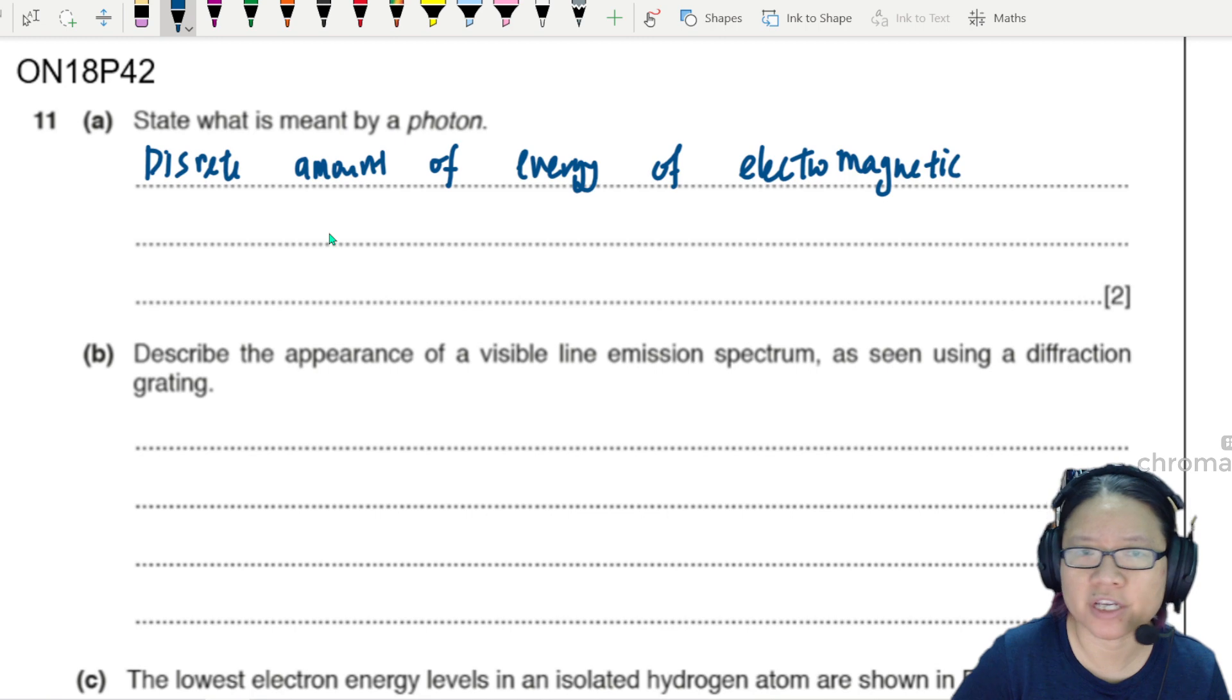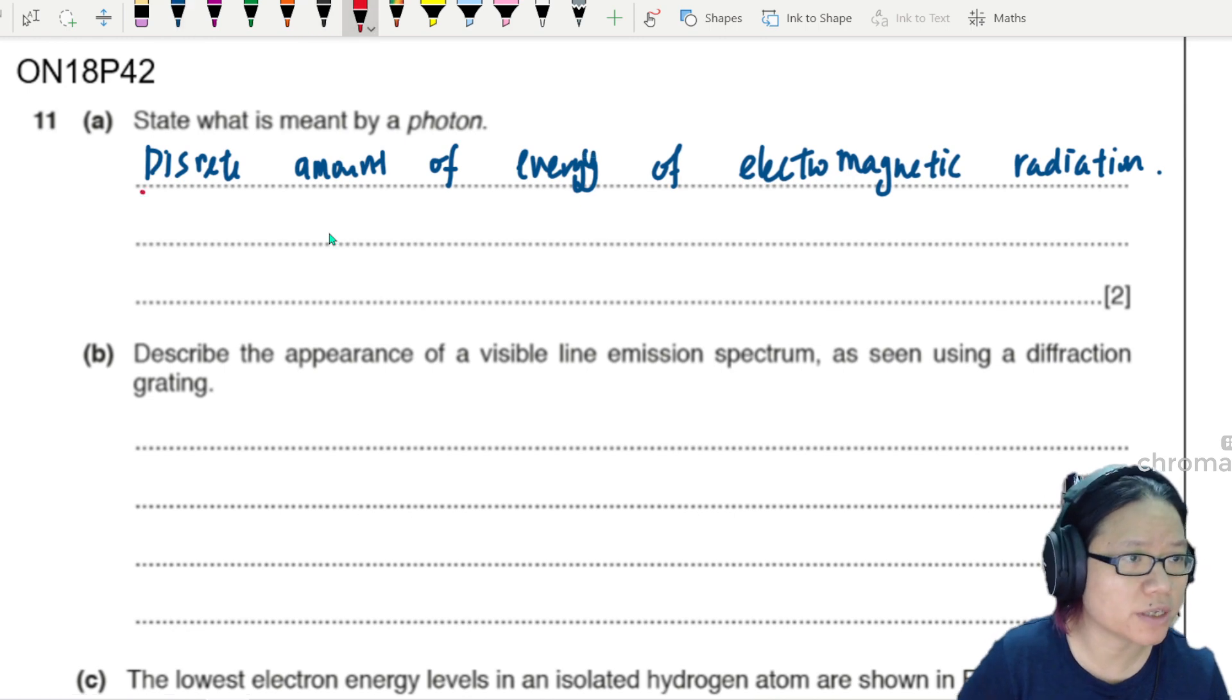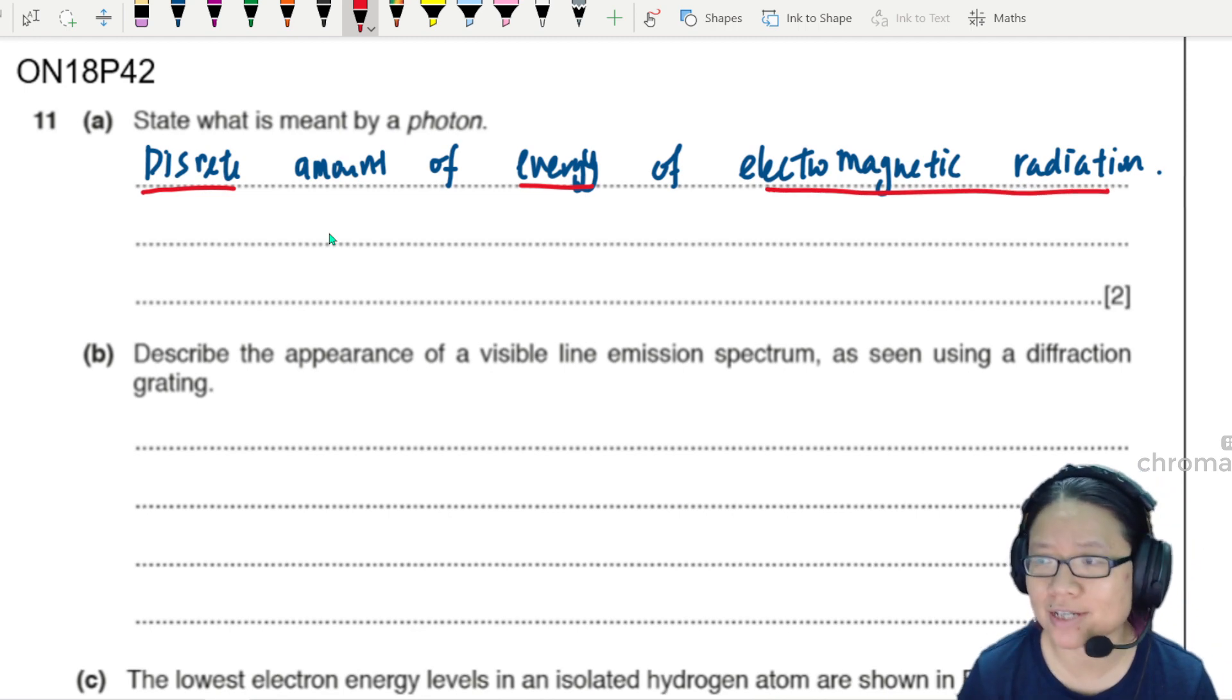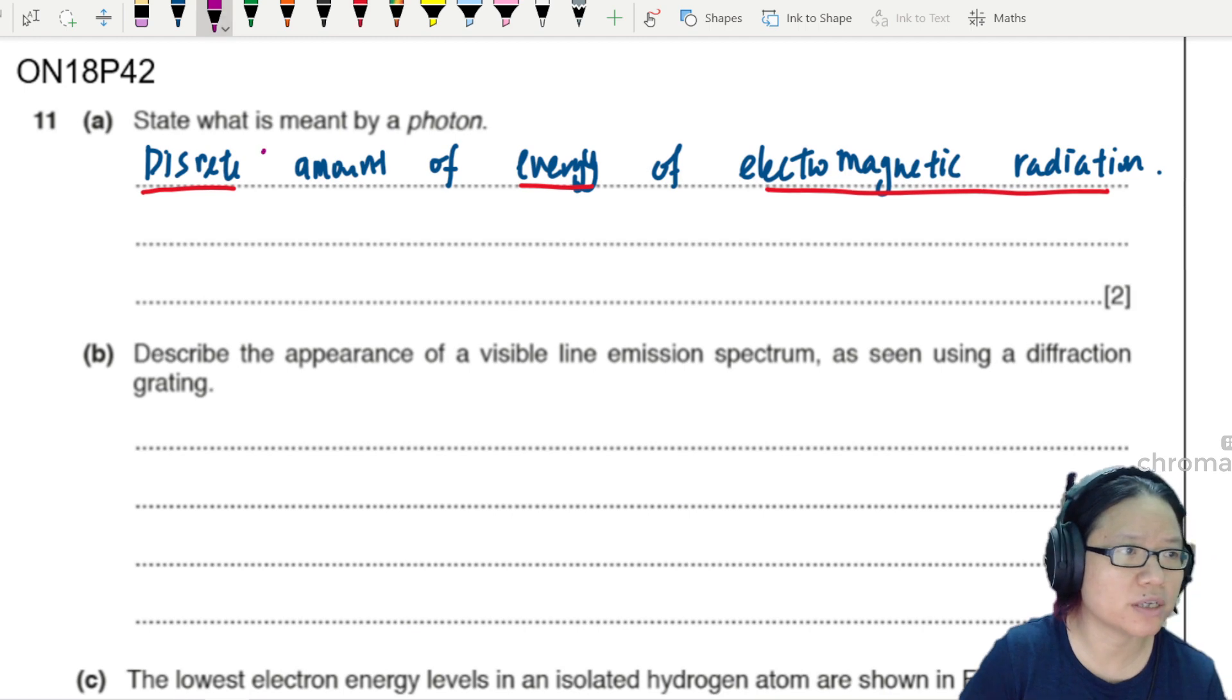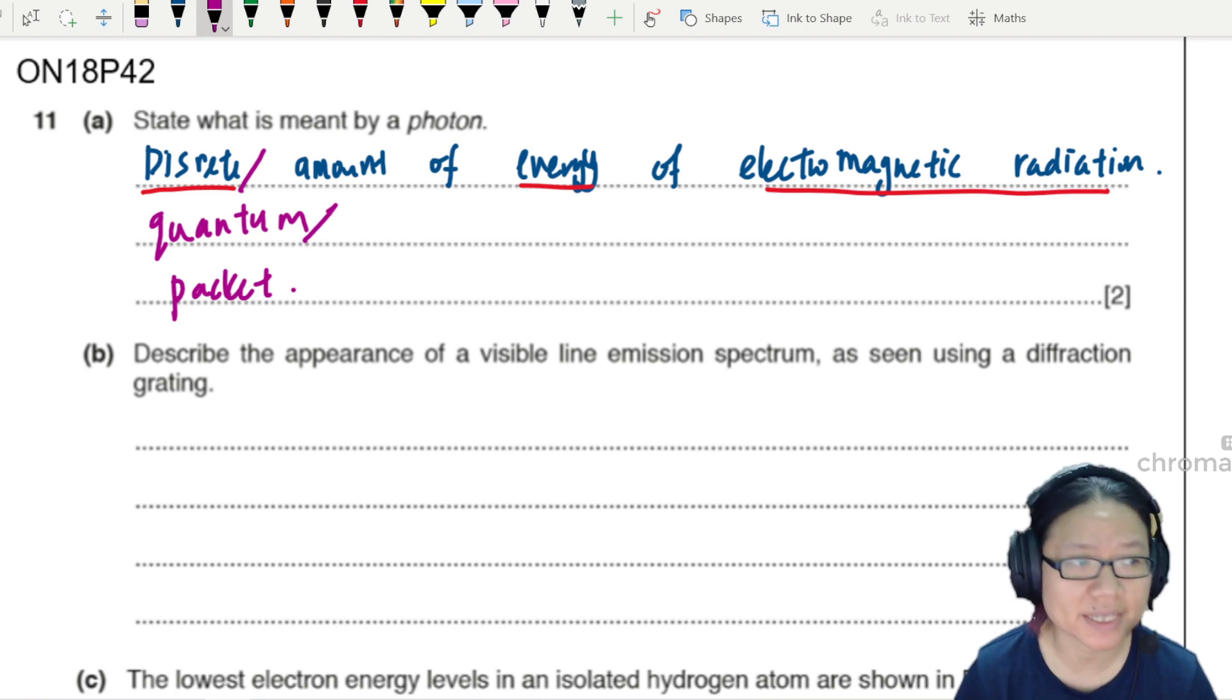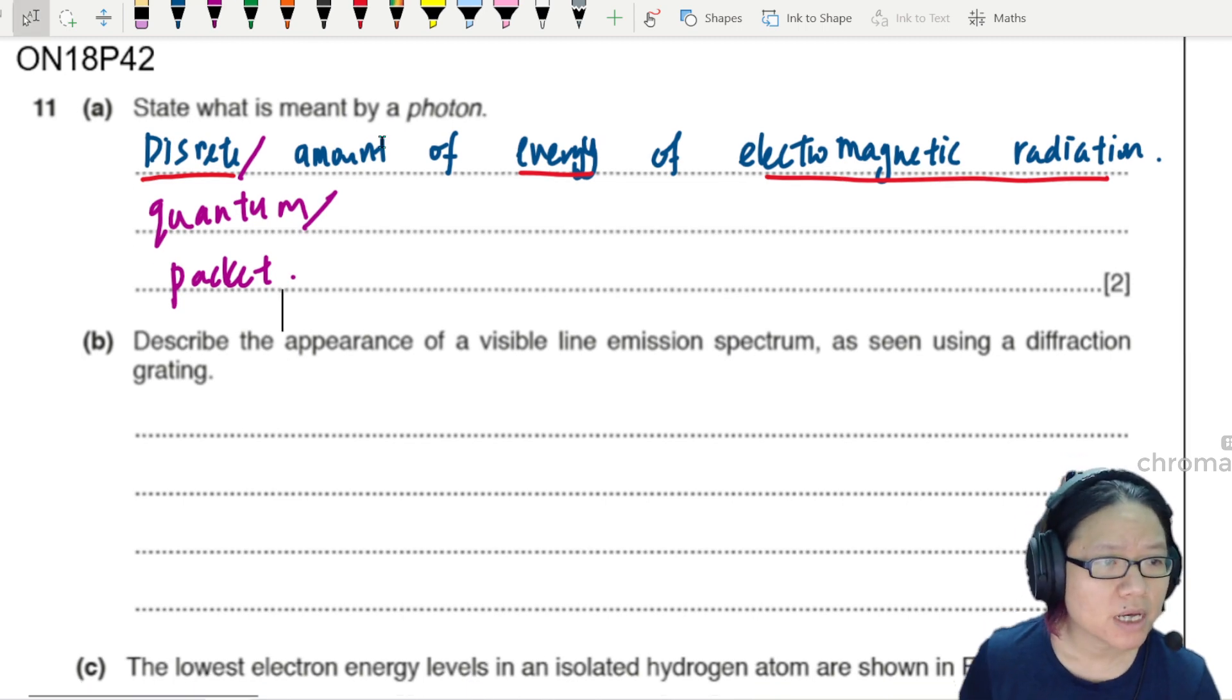You need to mention the keywords discrete energy and electromagnetic radiation. Other terms besides discrete: you can also use quantum of energy or packet of energy. Basically it's a fixed value, a fixed quantity.